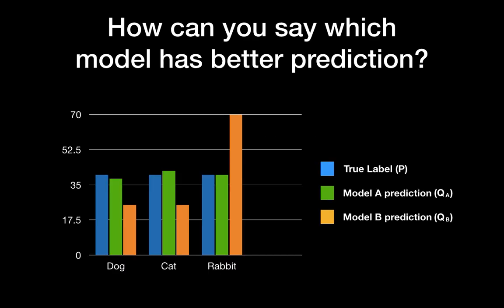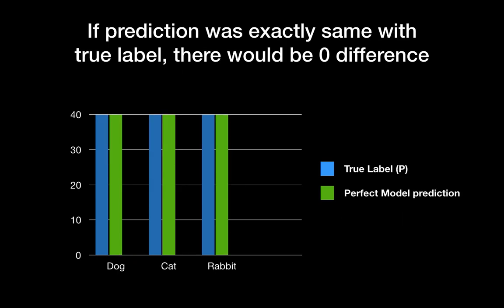The key concept is very easy. If you are training your supervised learning machine learning model, you should have the training data set, which is the true label sample data. I denoted this true label as the blue bar chart here. And let's suppose we have two machine learning models, A and B, having green color and orange color respectively. Can you say which machine learning model is better from this chart?